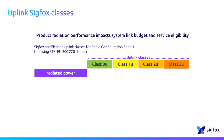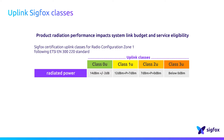Let's take the example of radio configuration zone number 1, in uplink mode. The device will get class 0 if its radiated power is between 12 and 16 dBm, class 1 between 7 and 12 dBm, class 2 between 0 and 7 dBm, and class 3 if the ERP is below 0 dBm.